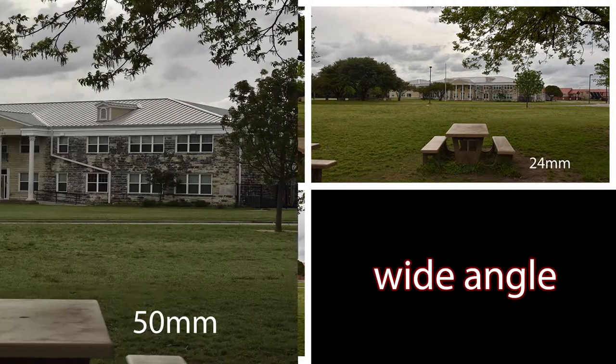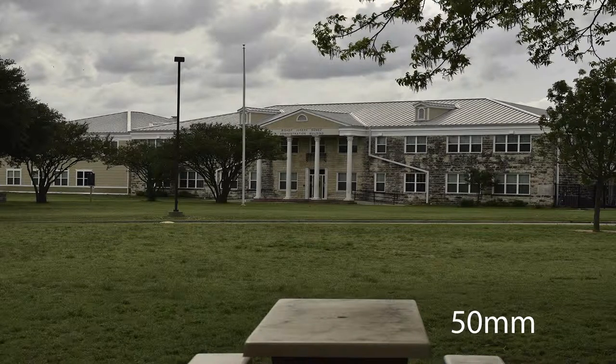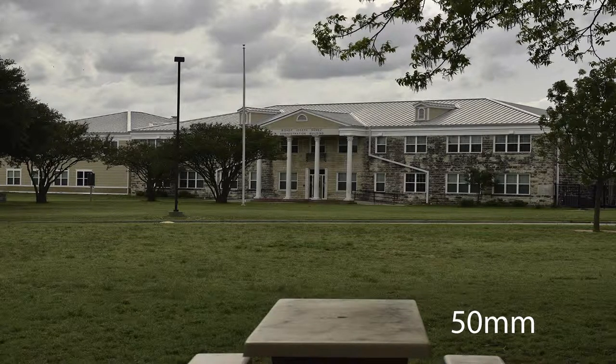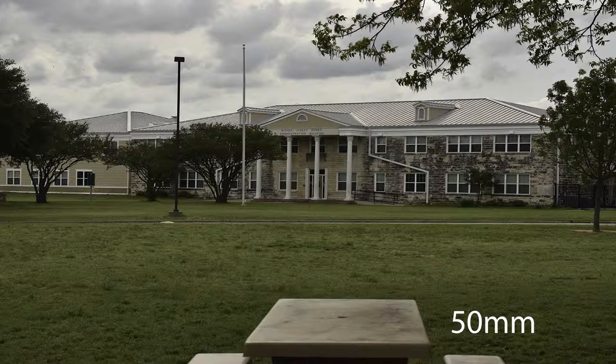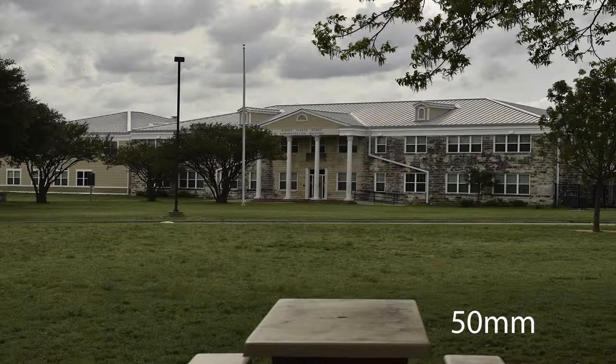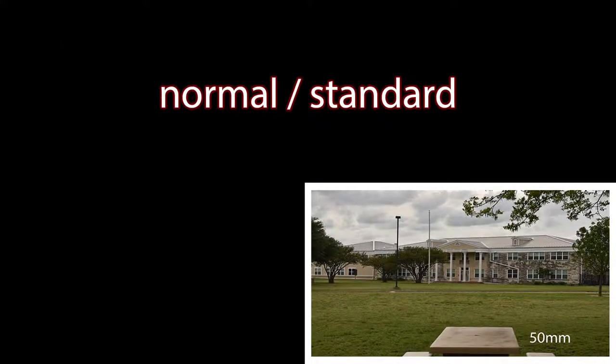Next on our list is a 50 millimeter shot from the same location. The 50 millimeter is going to give you what we call a normal field of view, which means that it's really close to the way that we see with our normal vision. About 40 to 60 millimeters is considered the standard normal range. This one was 50, and then we graduate from 50 up to the telephoto range.